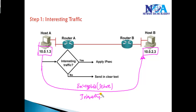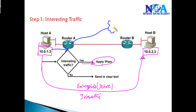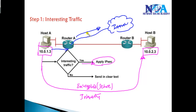Interesting traffic defines which traffic should have the IPSec parameters applied. For example, if this user is also trying to access some other resources on the internet — not communicating with the other host — I want that internet-destined traffic to not get encrypted and not have IPSec parameters applied. That traffic should remain in clear text. That is exactly what interesting traffic defines.